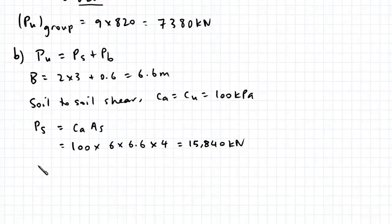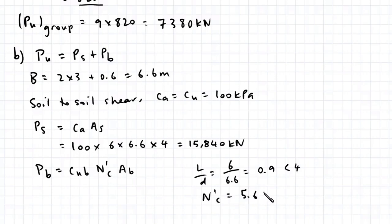To find the total base resistance, that's Cub multiplied by N dash C multiplied by the area of the base. The length to diameter ratio is 6 over 6.6, which is 0.9, less than 4. Therefore N dash C equals 5.6 plus 0.85 L over D, which is 6.37.